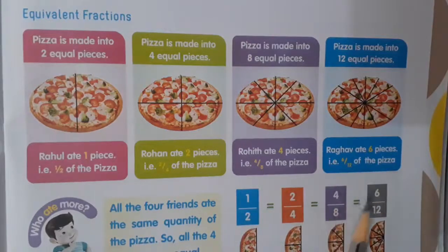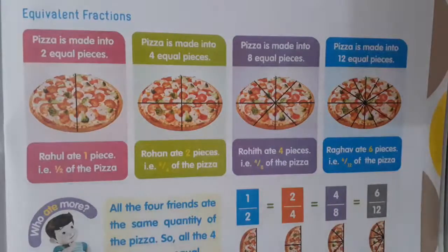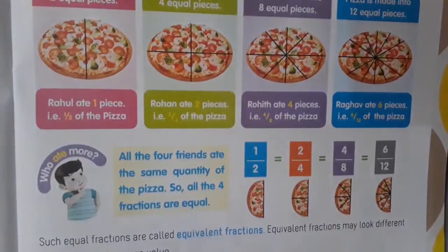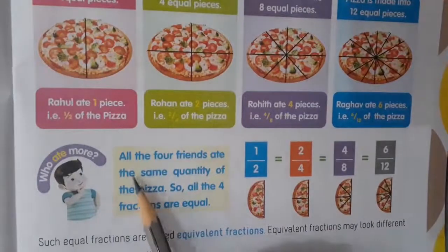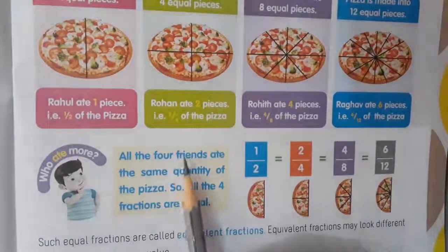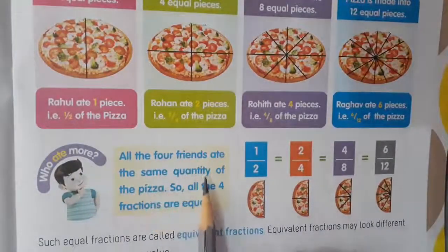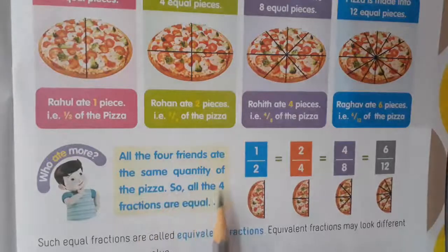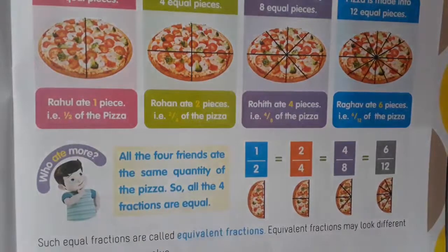Raghul ate 6 pieces, that is 6 by 12 of the pizza. See here: 1 by 2, 2 by 4, 4 by 8, 6 by 12 — these are all equal fractions. All 4 friends ate the same quantity of the pizza, so all 4 fractions are equal.